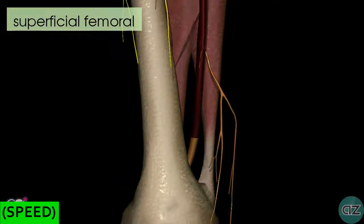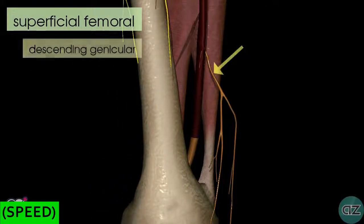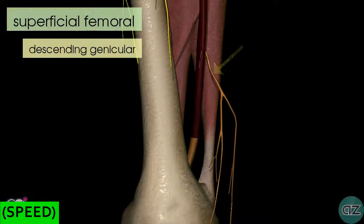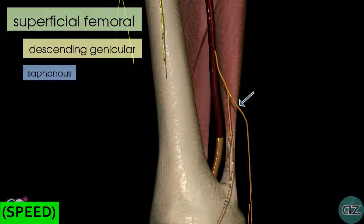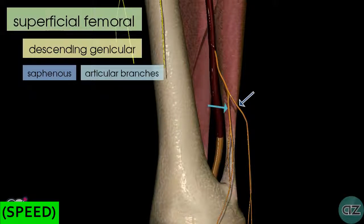Just before the superficial femoral artery leaves via the adductor hiatus, it gives off a branch known as the descending genicular artery. This artery itself has two main branches: the saphenous branch, which passes medially and anastomoses with the medial superior genicular artery, and the articular branch — there are lots of articular branches which anastomose around the knee joint.